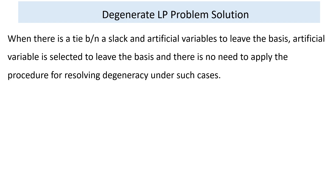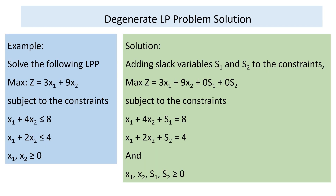Another rule is: when there is a tie between a slack variable and an artificial variable to leave the basis, the artificial variable is selected to leave, and there is no need to apply the degeneracy-resolving procedure in such cases. Now let's do an example regarding degenerate linear programming.